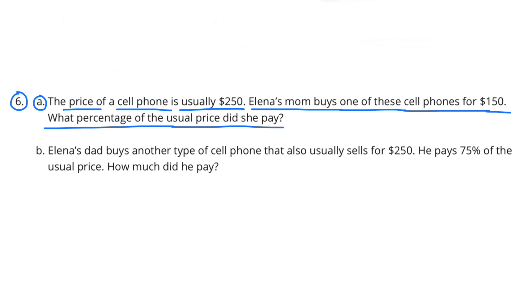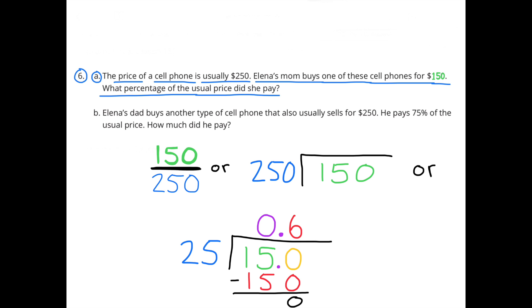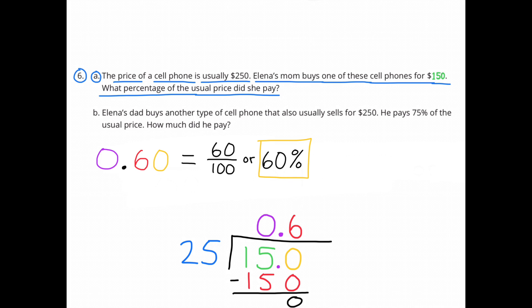Number 6: The price of a cell phone is usually $250. Elena's mom buys one of these cell phones for $150. What percentage of the usual price did she pay? She paid $150 compared to the usual price of $250. We can figure out the percentage by dividing 150 by 250, which is 0.6, or 60 hundredths, which is the same thing as 60%. $150 is 60% of $250.